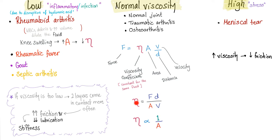It's called physics. Rheumatic fever, gout, septic arthritis — all of these are inflammatory or infectious, and they can increase the volume of the fluid (joint swelling), increasing the area and decreasing the viscosity coefficient. They also alter the nature of the fluid by adding white blood cells and debris, so you get a lower viscosity fluid.